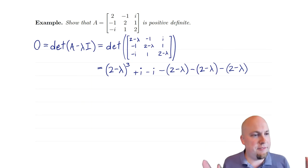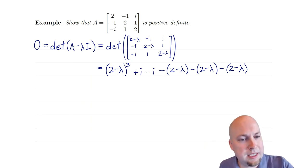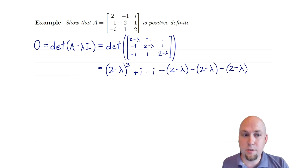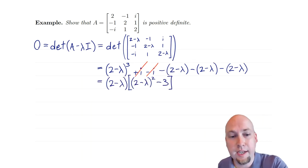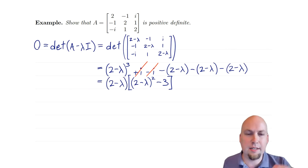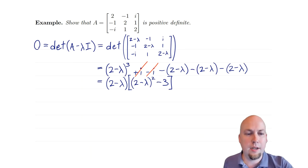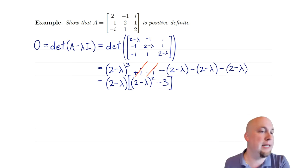Now let's simplify and factor this to find the eigenvalues. The trick is that the +i and −i terms just cancel out. And then all the remaining terms have (2−λ) in them, so we can factor a (2−λ) out of everything. When we do that, we're left with (2−λ) times: (2−λ)³ just becomes (2−λ)², and then what's left over on the right is just −1, −1, and −1, so −3 altogether.